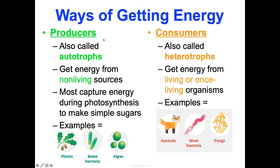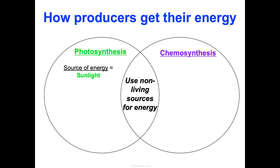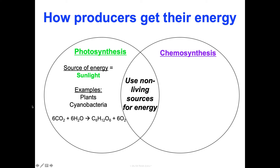Let's zoom in on producers first. There are two processes they use: they can either be photosynthesizers or chemosynthesizers. Both processes use non-living sources for energy. In photosynthesis, that source is the sun. Plants and cyanobacteria are some organisms doing this. The equation: they use carbon dioxide and water to capture sunlight energy, storing it in glucose while also producing oxygen.